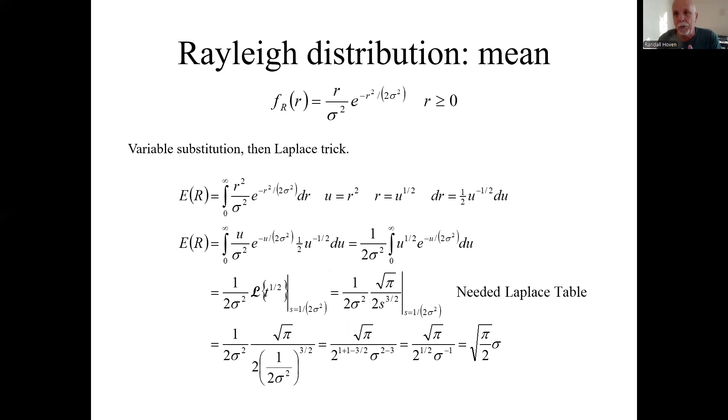So now we'll apply it to the Rayleigh distribution and dig into this Rayleigh distribution. Here we'll say we're given the PDF. Here's the PDF of a Rayleigh distribution. It's zero for r less than zero. So this is what it is for r greater than zero.